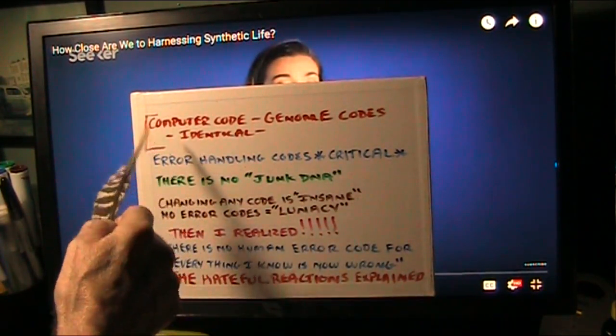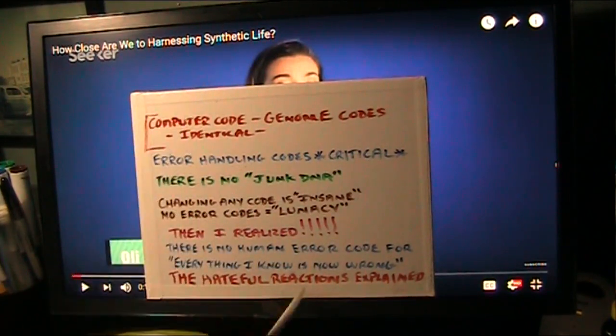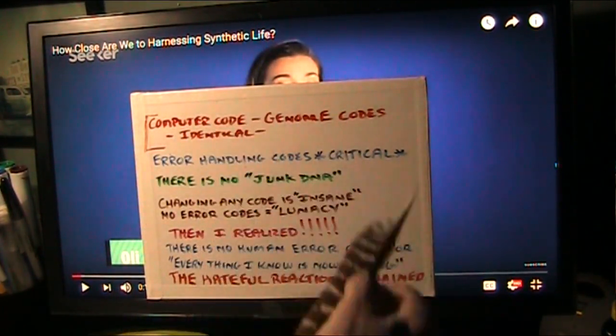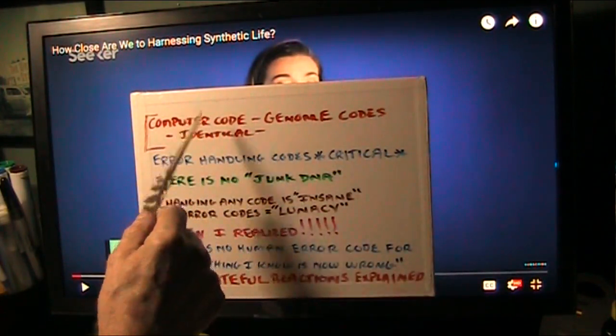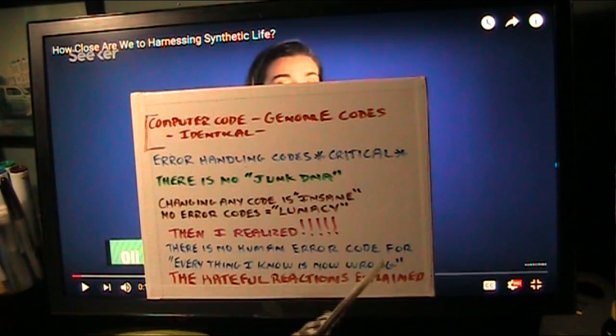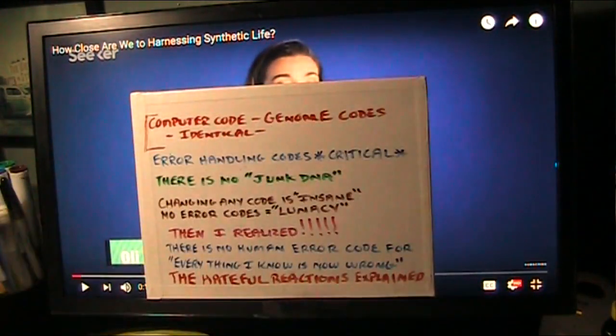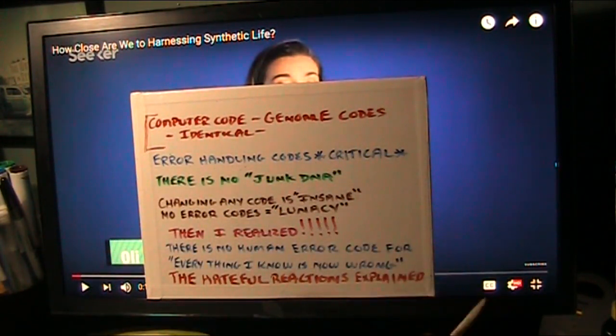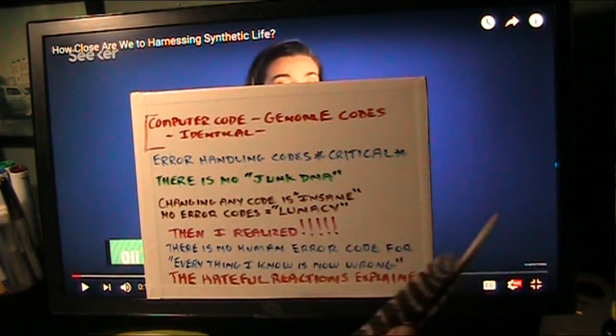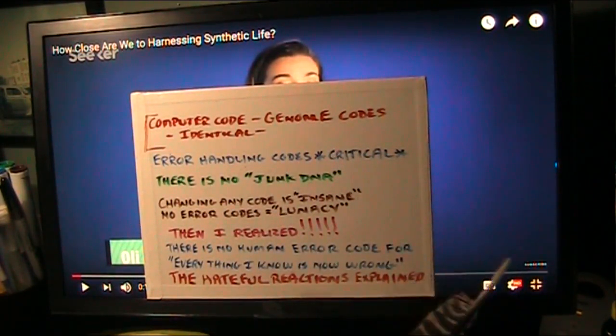What I'm going to tell you right now is a fact: computer code and genomic code that's in your body that runs the cells and everything happening inside of you - your DNA and all that stuff - is identical to computer code. Absolutely identical. Start code and end code and then it has instructions in the middle. I took genomics at Johns Hopkins and I understand because I owned a software development company too.